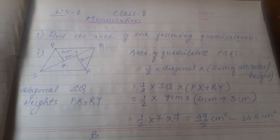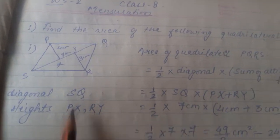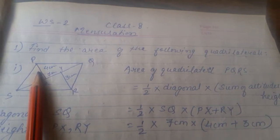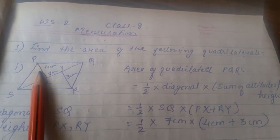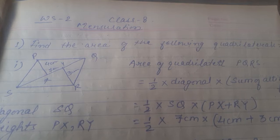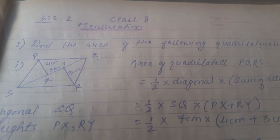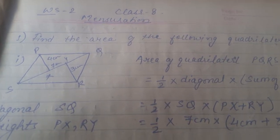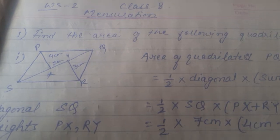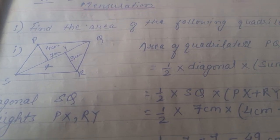Kids, we are doing worksheet number 2 of chapter mensuration, in which we are supposed to find out the area of the quadrilateral and the area of the polygon. There is no fixed formula to find out the area of any quadrilateral or any polygon. A polygon is a figure made up of line segments.